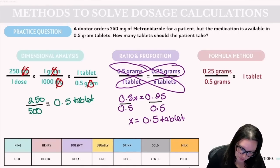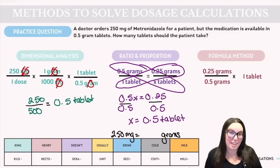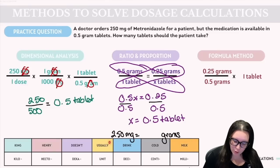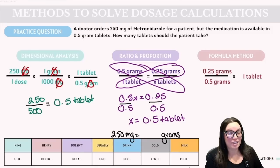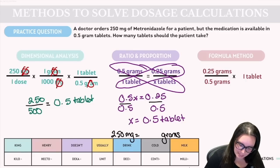In this case, we have 250 milligrams and need to convert to grams, since that's what the medication is available in. To convert, we simply move the decimal place. Going from milligrams to grams is moving to a base unit, so we move the decimal three places to the left, giving us 0.25 grams.